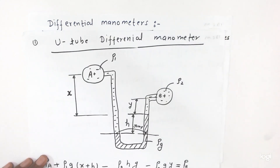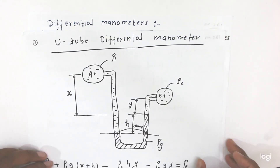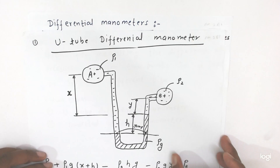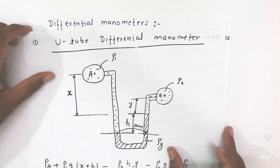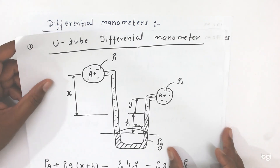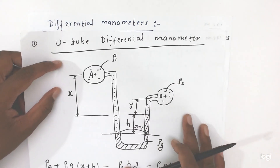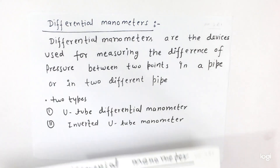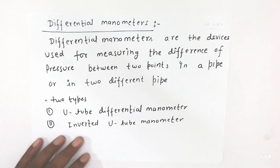So this is the differential manometer. It is also of two types: the U-tube differential manometer, and the second one is the inverted U-tube manometer.